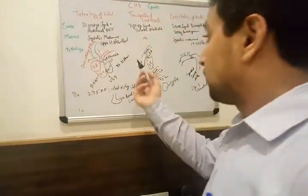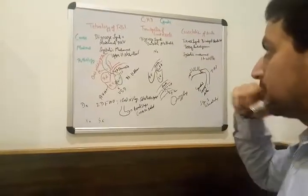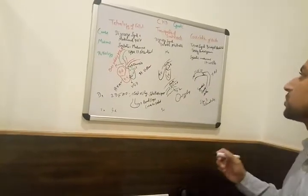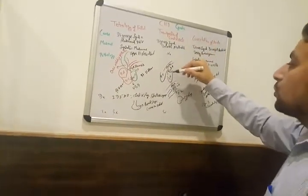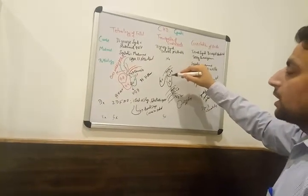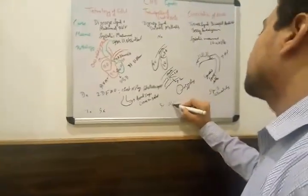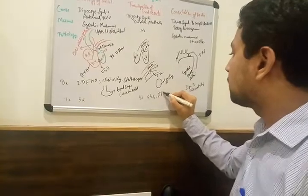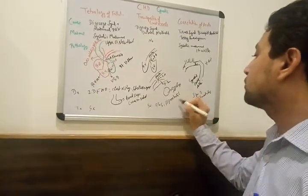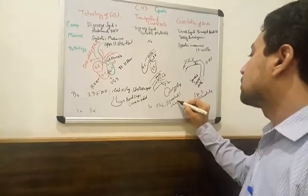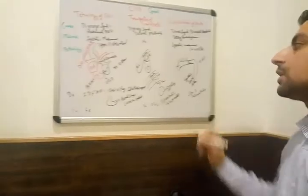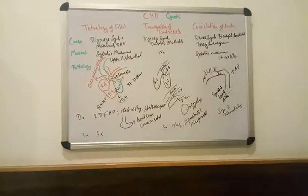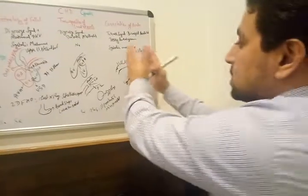Treatment: we can use surgical correction in tetralogy of Fallot. In case of transposition of great vessels, also surgical correction and repositioning. If we want to open the ductus arteriosus, we can use PGI — prostaglandin I — such as alprostadil or misoprostol, to open and make the ductus arteriosus patent. Surgical correction such as anastomosis — cutting this part — can also be done.